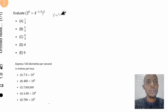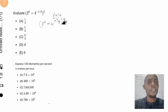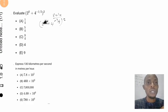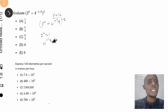Let's go to the solution. We have 2 raised to the power of zero, plus 4 raised to the power of negative one-half, all in brackets raised to the power of two. Let's solve the bracket first before we apply the square roots. Anything raised to the power of zero is equal to one — according to the law of indices, it is always equal to one. So 2 raised to the power of zero equals one.